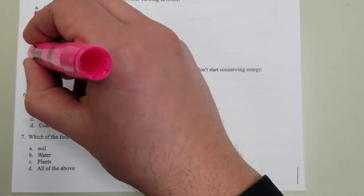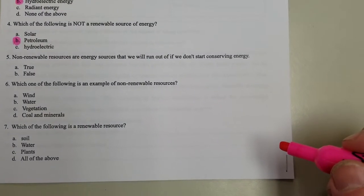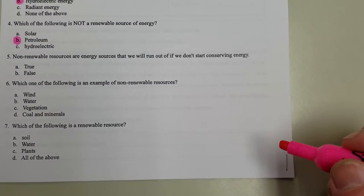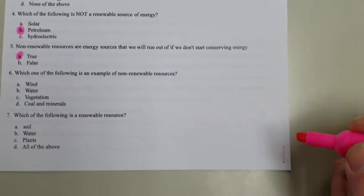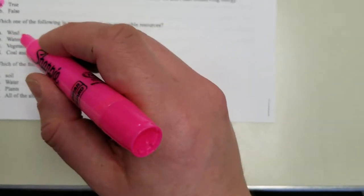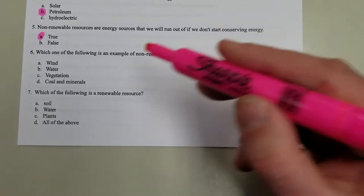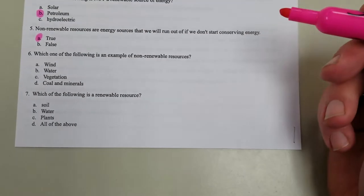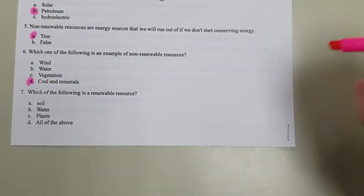Non-renewable resources are energy sources that will run out if we don't start conserving energy. That's gonna be true. Which of the following is an example of a non-renewable resource: wind, water, vegetation? Wind is pretty constant in Illinois. Water, we already said definitely not. Vegetation can regrow. Coal and minerals, boom.